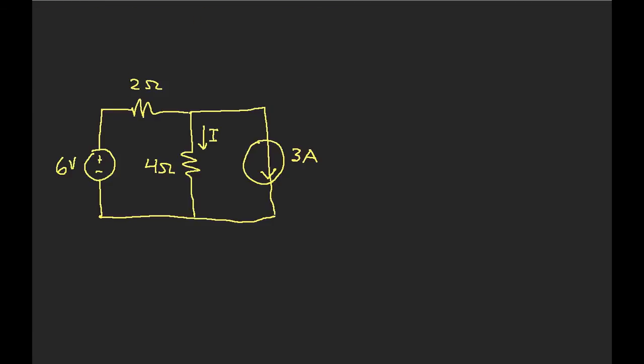So superposition basically says that any voltage or current in a circuit is the sum of the voltages or currents due to each individual independent source alone. So in this example that we have here, the current i might be something that we want to solve for.